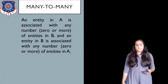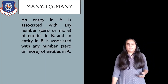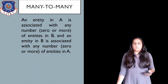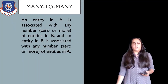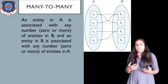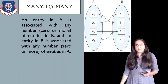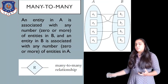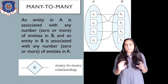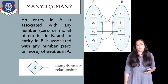The next type of cardinality is a many-to-many cardinality, where an entity in A is associated with any number of entities in B, and an entity in B is associated with any number of entities in A. You can connect anything with anything — there are no rules applied. In the diagram, we show the two lines with relation R without any arrows, which indicates a many-to-many relationship.